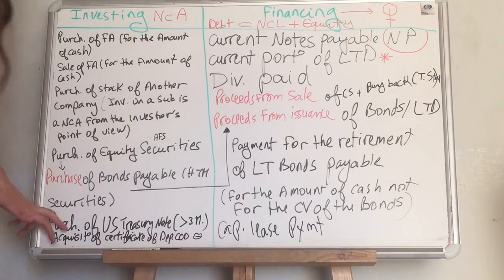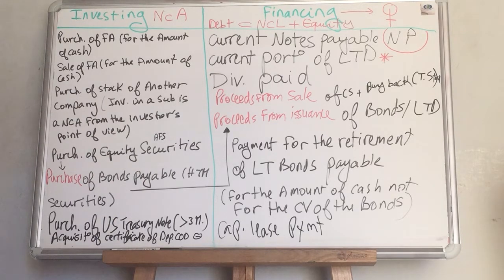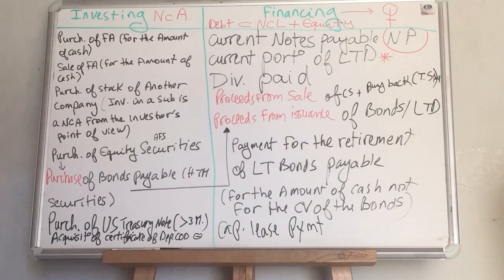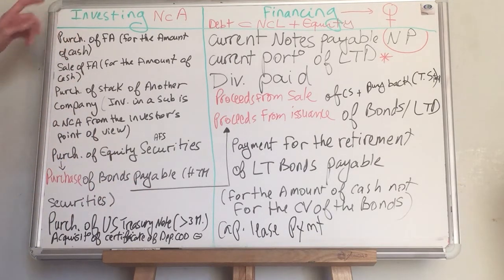Two more points: purchase of U.S. treasury notes if the maturity is more than three months or 90 days is in the investing section. Cash and cash equivalents are short-term — three months or 90 days or less — and highly liquid. If U.S. treasury notes have a maturity of, say, 60 days, they are considered part of cash and cash equivalents and no longer reported in the investing section.